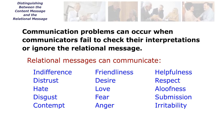Communication problems can occur when communicators fail to check their interpretations or ignore the relational message. Relational messages can communicate indifference, friendliness, helpfulness, distrust, desire, respect, hate, love, aloofness, disgust, fear, submission, contempt, anger, and irritability.